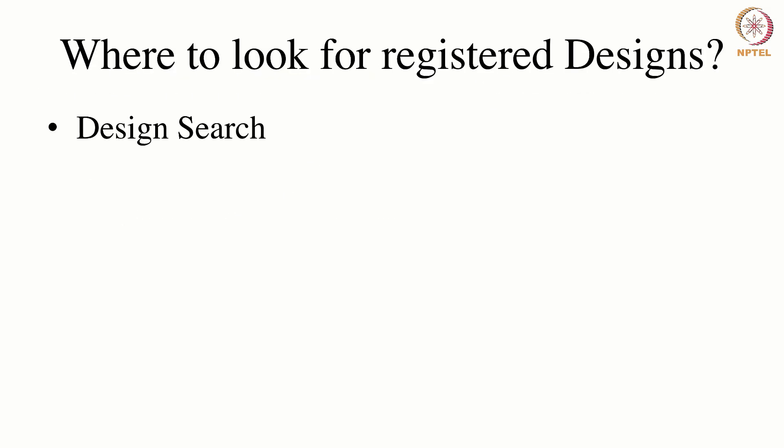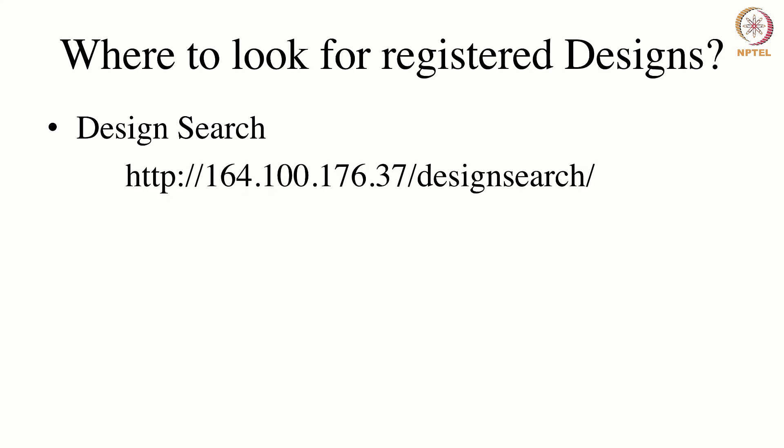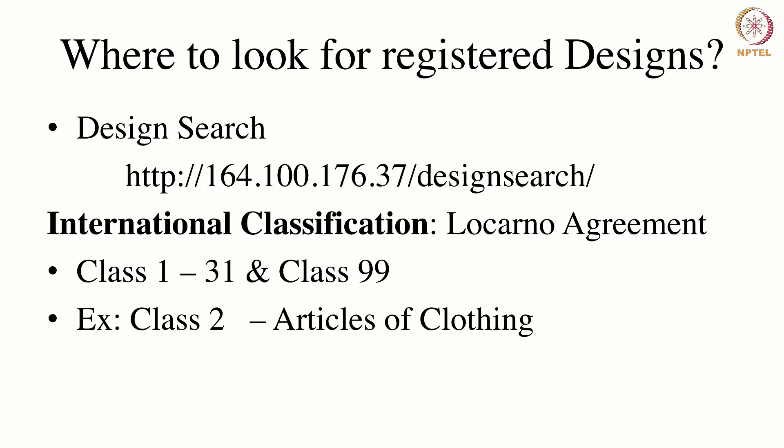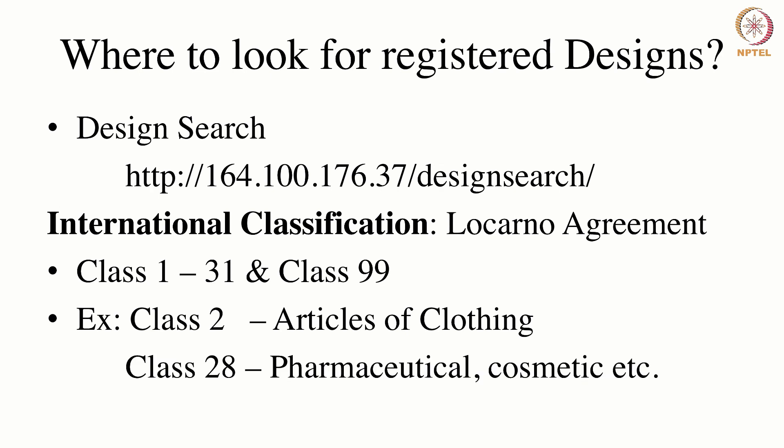Before a person files for a design, they can do a design search. The patent office has a website where you can conduct the design search. There is an international classification developed under the Locarno Agreement which classifies different classes under which a design can be registered, similar to the Nice Agreement for trademarks. There are classes 1 to 31 and class 99 — for example, class 2 deals with articles of clothing and class 28 deals with pharmaceuticals and cosmetics.